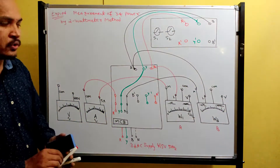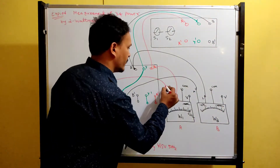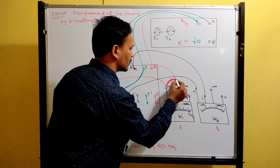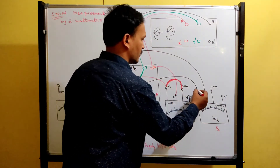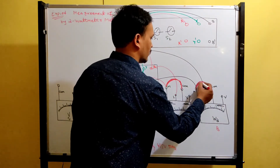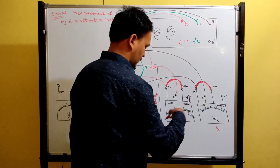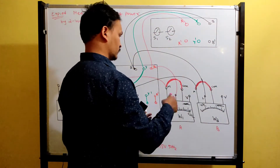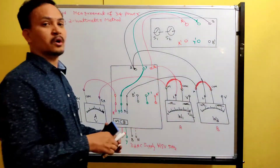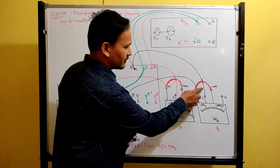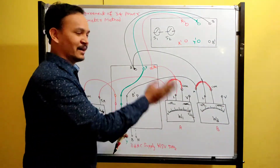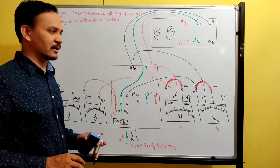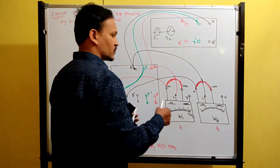Now we need to short M and C for both wattmeters. Short M and C — this black wire end is not connected separately; insulation is around the conductor. So M and C you must short for both wattmeters.